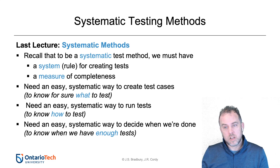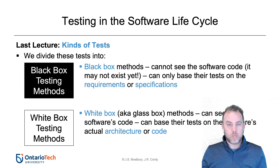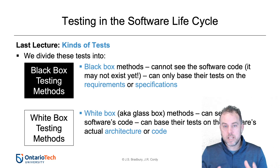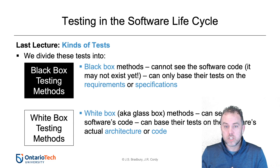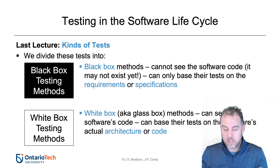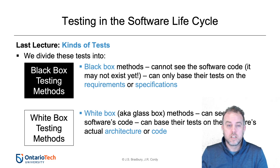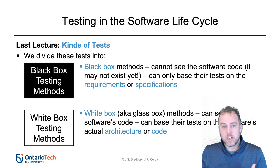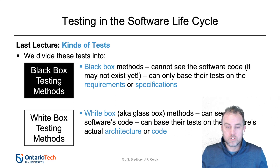Today we're not talking about white box testing — we're talking about black box methods. Black box methods are the testing methods that are based solely on the requirements or the spec, and not based at all on any information about the source code, which either is unknown when you create the test, or doesn't even exist yet. You can create black box tests before you ever have any code to test. White box, by contrast, uses information about the source code itself to help create the test cases.